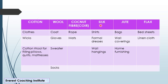Next comes silk. Silk is made by the silkworm. Examples of silk products: silky shirts, formal dresses, wall hangings — all made from silk. Then comes jute. Uses of jute include bags, wall coverings, and home furnishing — these are all jute examples.